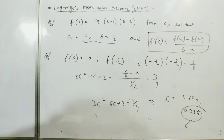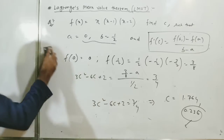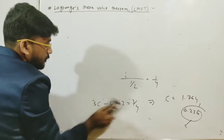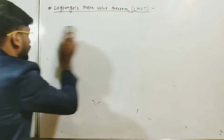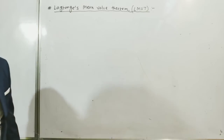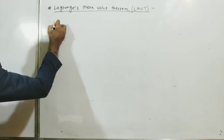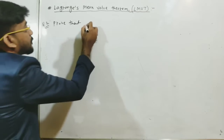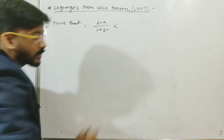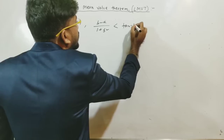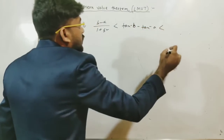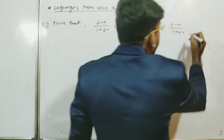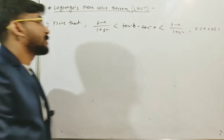Now let's take another example involving inequalities. You can also prove inequalities using Lagrange's Mean Value Theorem. Problem 2: Prove that (b − a) / (1 + b²) < tan⁻¹(b) − tan⁻¹(a) < (b − a) / (1 + a²), given that 0 < a < b < 1.